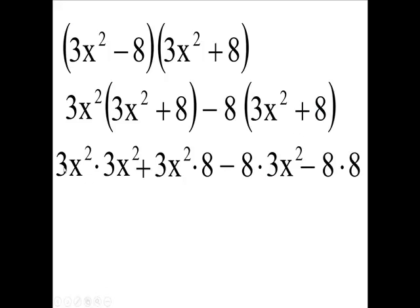So you end up with 9 with 4 x's or 9x to the 4th. This gives you 24x squared. This is a minus 24x squared so these guys cancel.